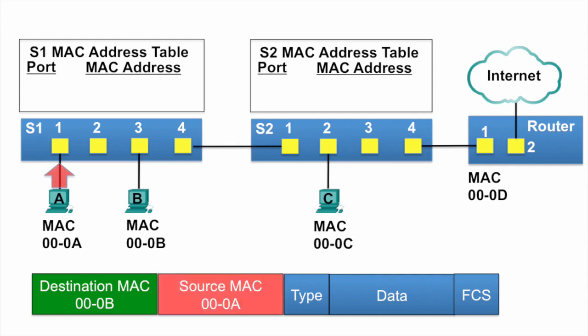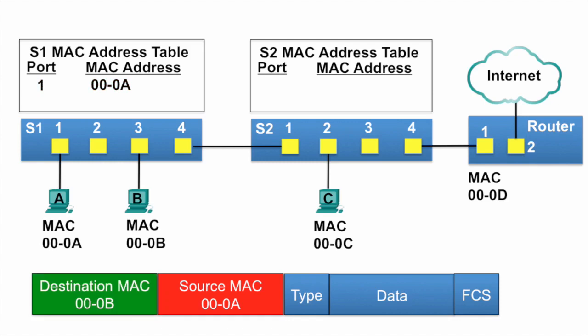S1 receives the Ethernet frame, examines the source MAC address, and notices that this MAC address is not in its MAC address table, so it adds the MAC address and the incoming port number. Next, switch S1 examines the destination MAC address and notices that this MAC address is not in its table, so it floods it out all ports.